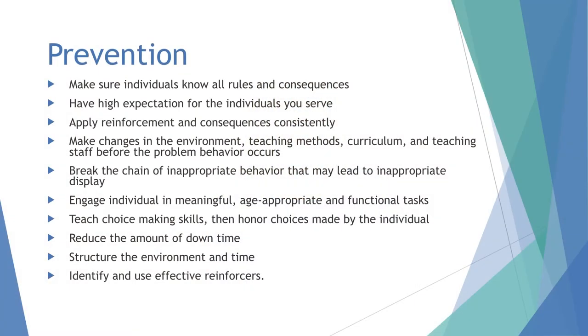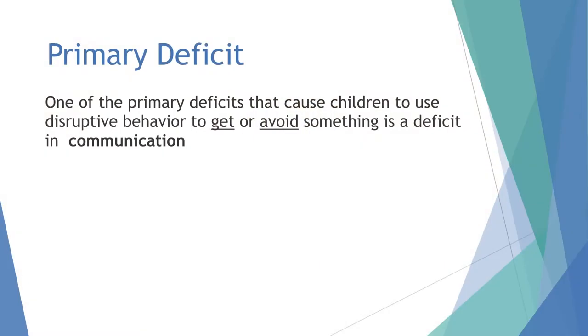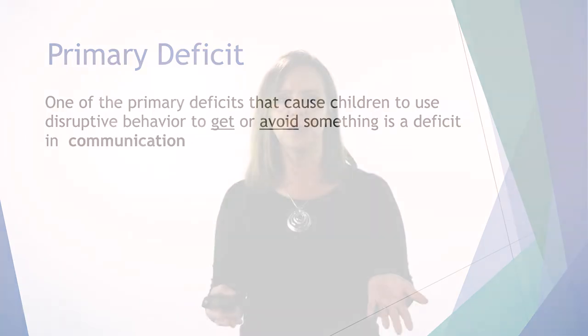We also want to identify and use effective reinforcers — that's an important piece. We want to reinforce good behavior. If a little girl is screaming because she doesn't know how to use language and mom gives her Cheez-Its to stop, we need to teach her to ask — maybe through signing, a card, or words. We have to reinforce that communication by saying 'great job using your words, here's a snack,' so we increase that behavior. A primary deficit causing disruptive behavior is the communication deficit: if they don't have communication skills, behavior is more likely to happen.